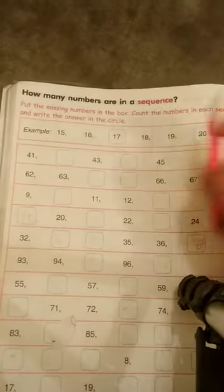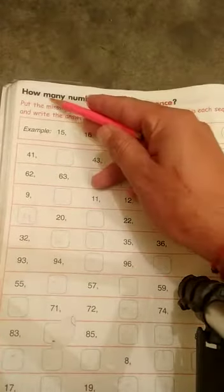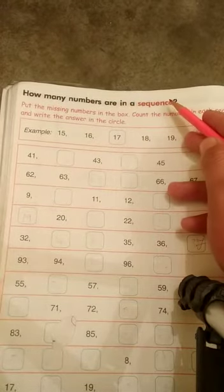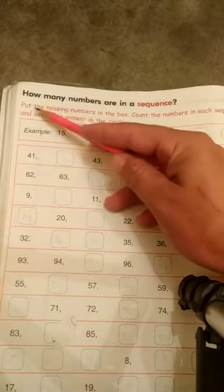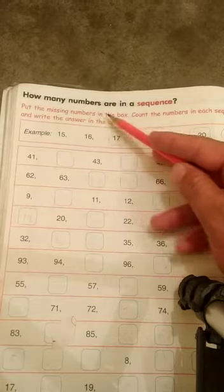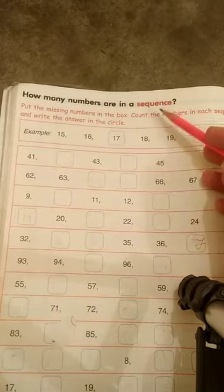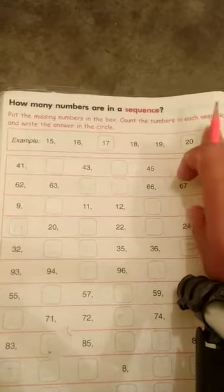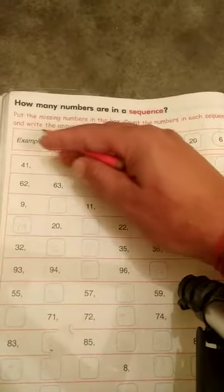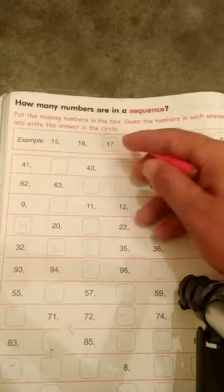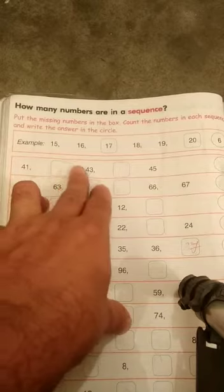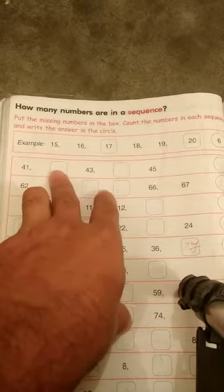How many numbers are in a sequence? Put the missing numbers in the box, count the numbers in each sequence, and write the answer in the circle. Okay, here is given empty boxes you have to fill the numbers in the box.